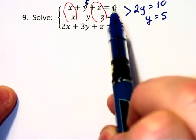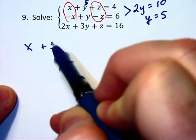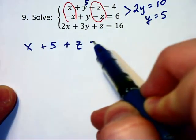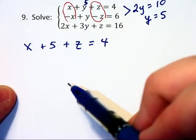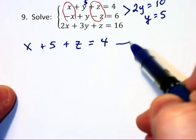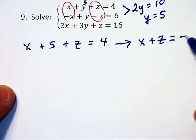So if I subtract that 5 to the other side, that first equation becomes x plus 5 plus z equals 4, but I don't really like it that way. So I'm going to rewrite that instead as x plus z equals negative 1,